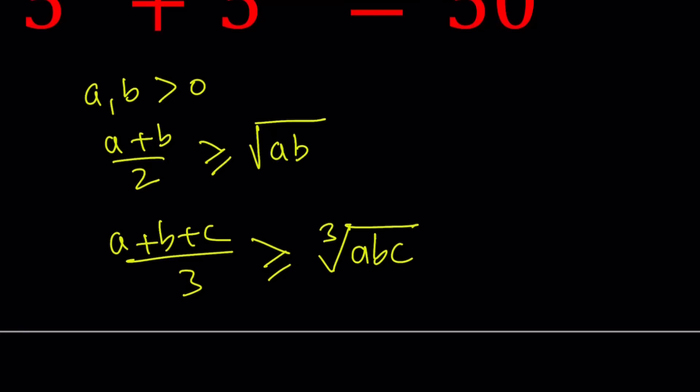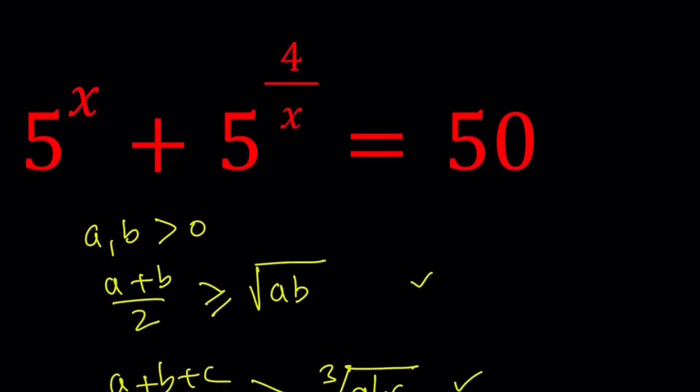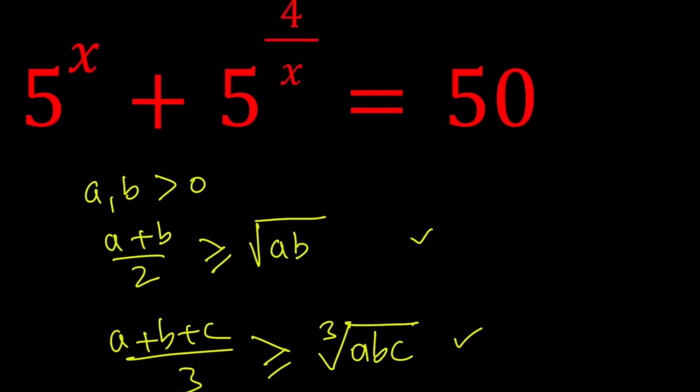When you have n numbers, you take the nth root and multiply the numbers together. The proof is not that easy. For the case n equals 2 and n equals 3, those are actually really easy inequalities. For the case of n, you can use induction. You have to distinguish between n equals even and n equals odd.